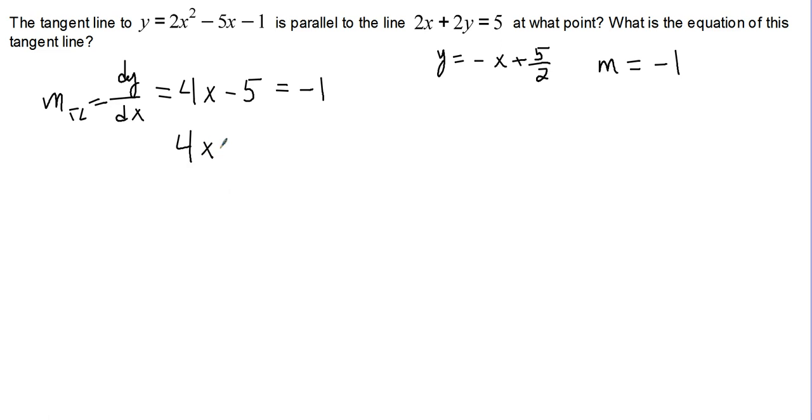Solving that equation, we end up with 4x equals 4, and x equals 1. So this occurs at x equals 1. We then need to figure out the point on the parabola at which x equals 1, so we need to find the y value.